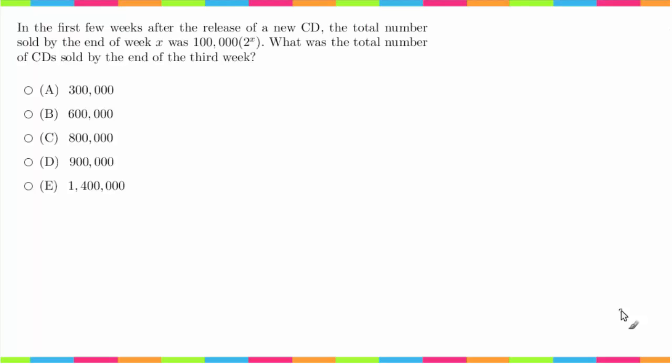Hey guys, welcome back. We're now working on question number 31. This question says: In the first few weeks after the release of a new CD, the total number sold by the end of week X was 100,000 times 2 to the X. What was the total number of CDs sold by the end of the third week?